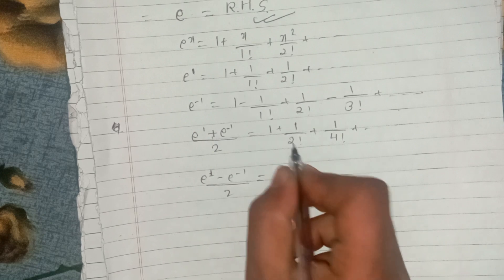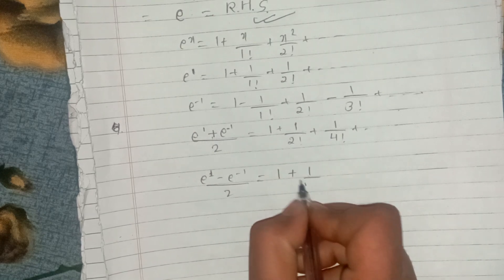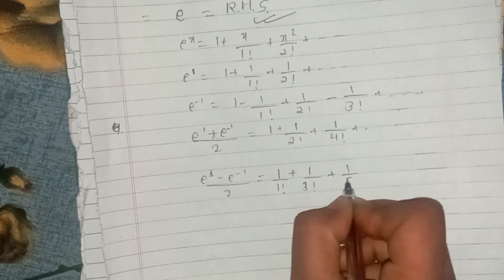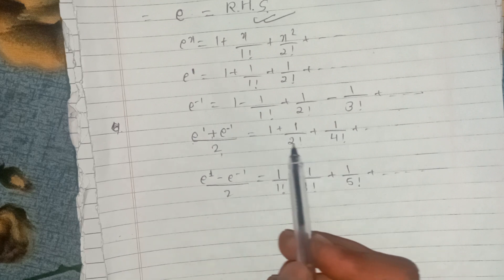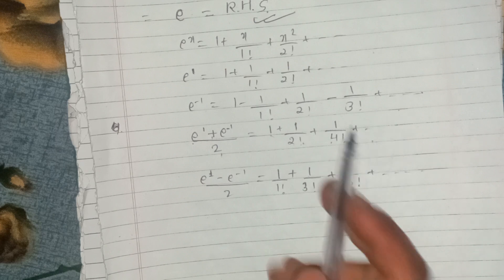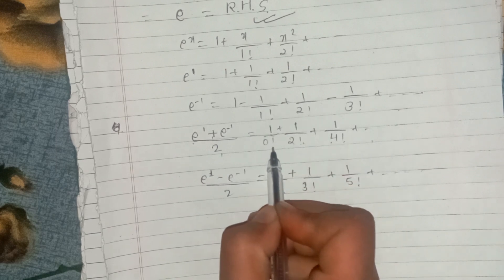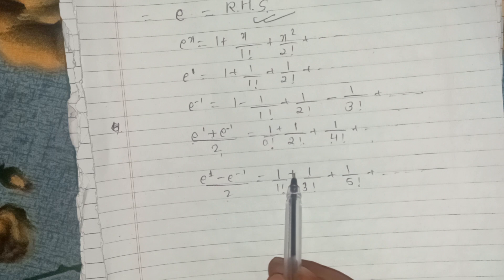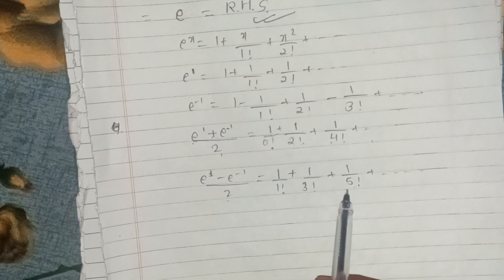And for the odd terms, we will add 1 by 1 factorial minus 1 by 3 factorial plus 1 by 5 factorial plus dot dot dot. We will compute using 2 factorial, 4 factorial, and 6 factorial. The odd sum gives e to the power 1 minus e to the power minus 1, divided by 2. We add 1, 3, 5 terms in this way.